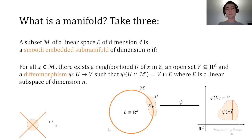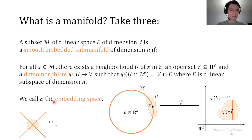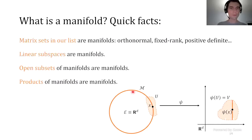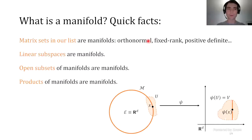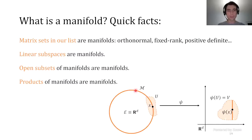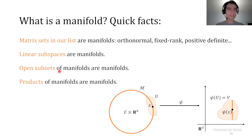So that's what a manifold is. I won't need the definition going forward, but it's good to see it at least once formally. Something more useful going forward: every set I've mentioned before is a manifold—sets of orthonormal matrices, fixed-rank matrices, positive definite matrices (since they form an open set). Also useful to know: linear subspaces are manifolds, open subsets of manifolds are manifolds, and Cartesian products of manifolds are also manifolds.